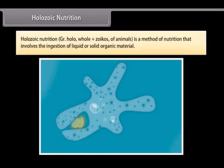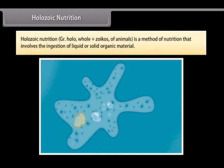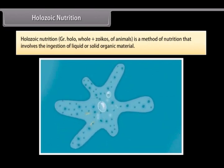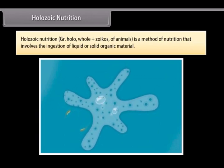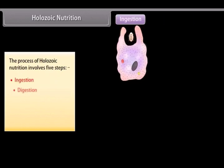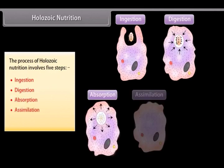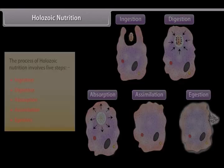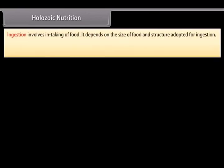Holozoic nutrition — 'holo' means whole and 'zoicos' means animals. It is a method of nutrition that involves the ingestion of liquid or solid organic material. The process of holozoic nutrition involves five steps: ingestion, digestion, absorption, assimilation, and egestion.